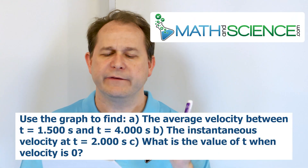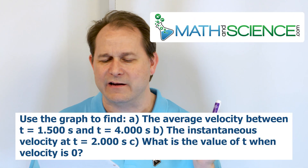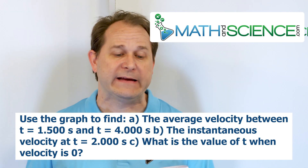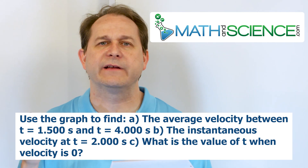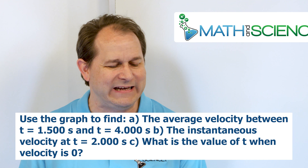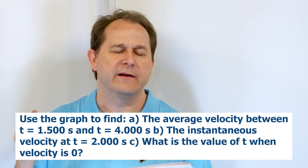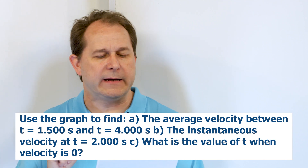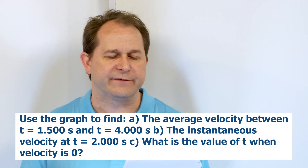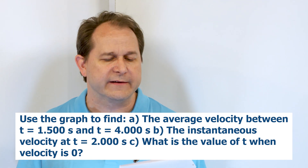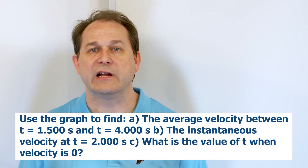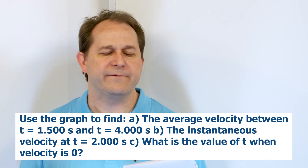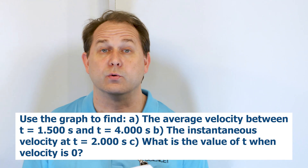The problem says use the position and time graph to find three things: the average velocity for the time interval t equals 1.5 seconds to t equals 4 seconds, the instantaneous velocity at t equals 2 seconds by using the slope of the tangent line on the graph, and part C, for what value of time is the velocity equal to zero.